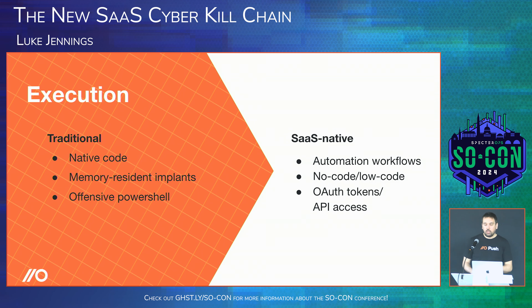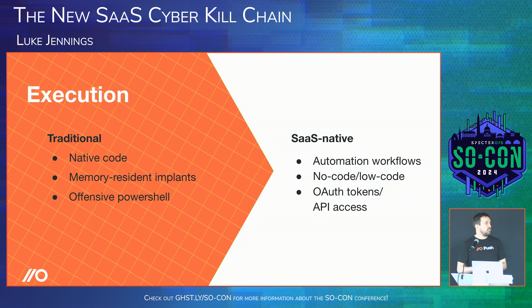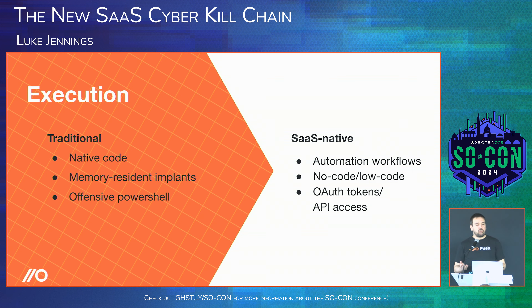You can't use client-side app impersonation for consent phishing because you don't control the callback URLs, but for persistence you can use localhost, which is always permitted — that's a useful exception.